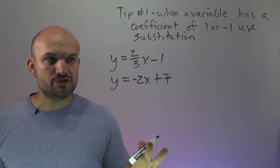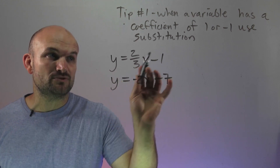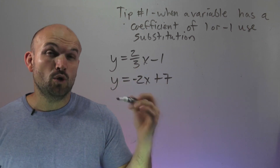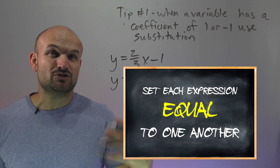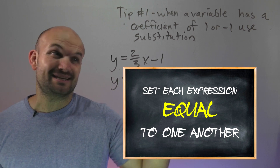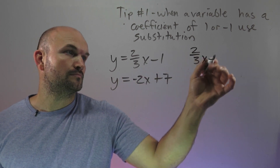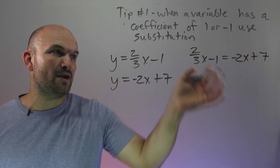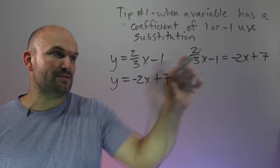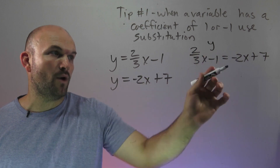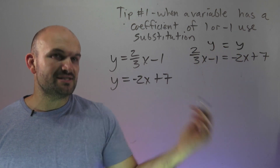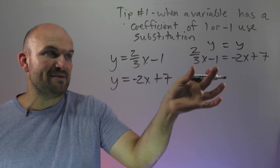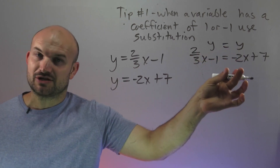So how are we going to use substitution in this case? Well, since y is equal to this expression as well as y is equal to that expression, we can just set each expression equal to one another. Y is equal to y, of course — so that means this expression is equal to that expression.